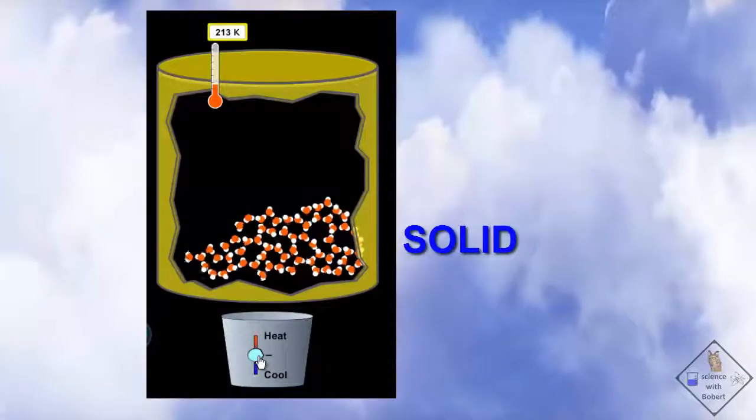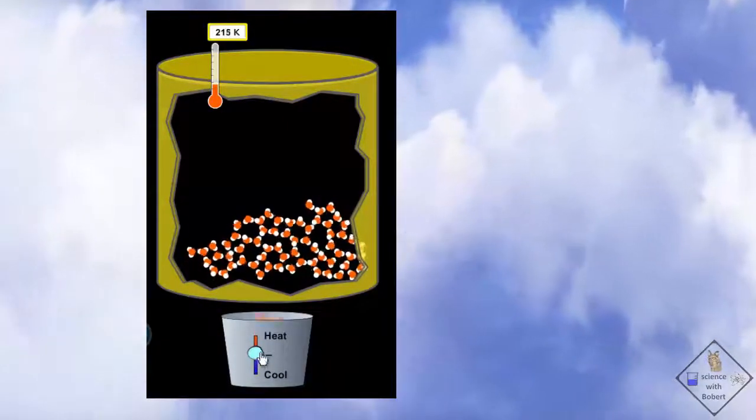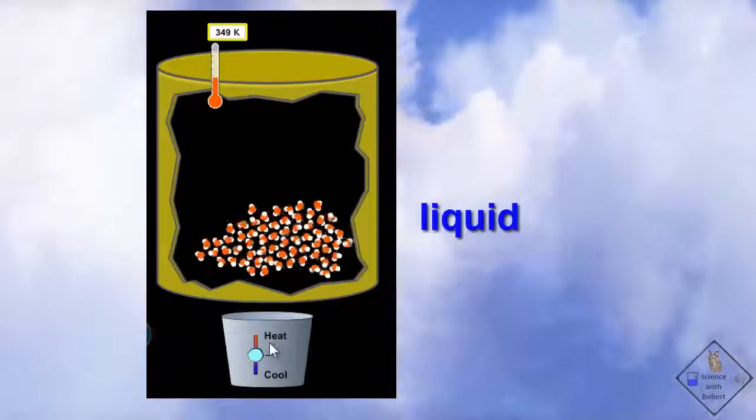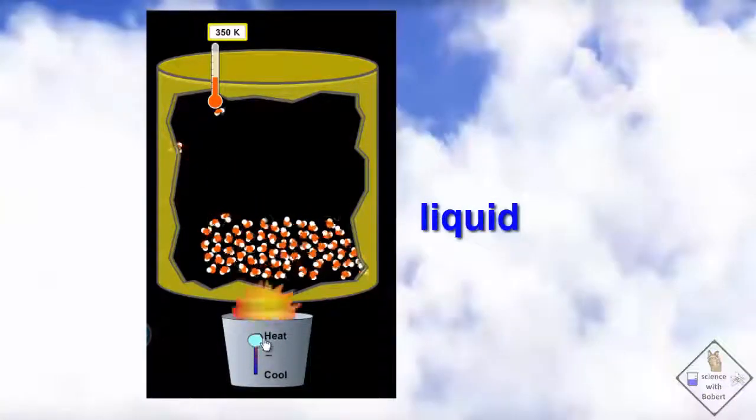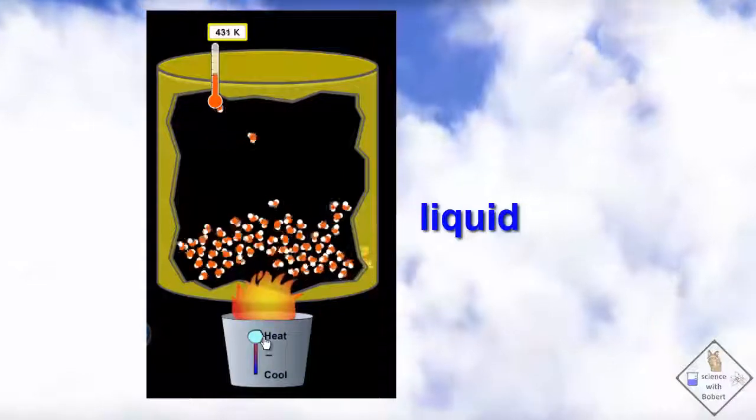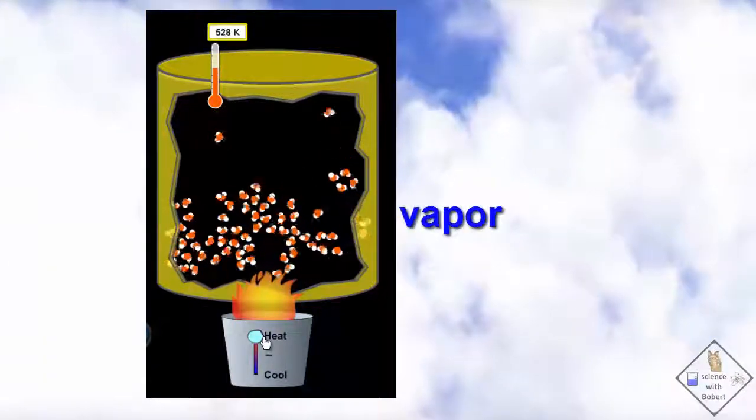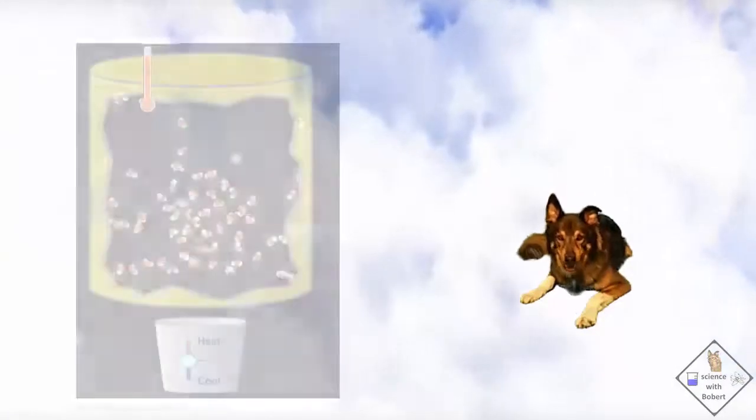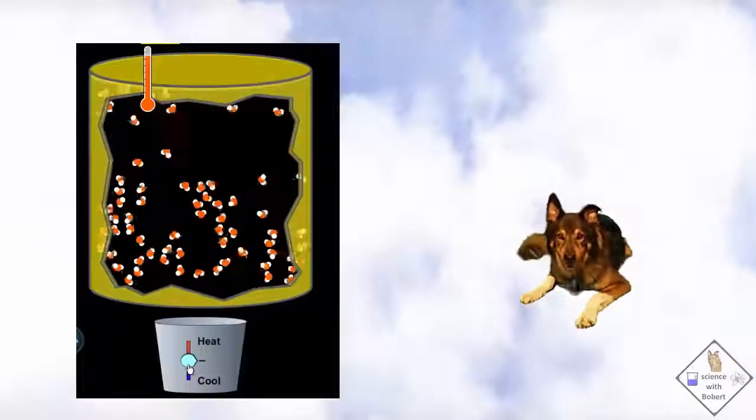So, if we start with a solid and slowly add heat to it, the solid will turn from a solid to a liquid to a vapor. However, cloud formation is the other way around.